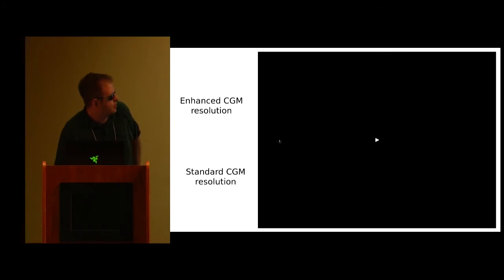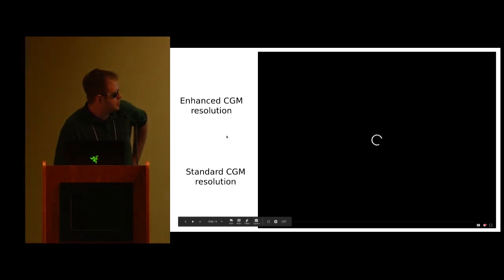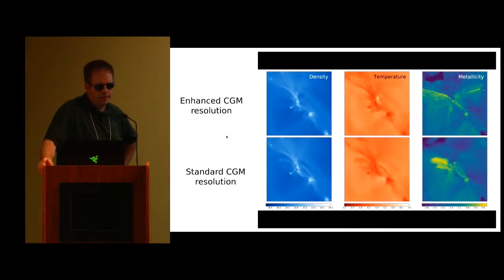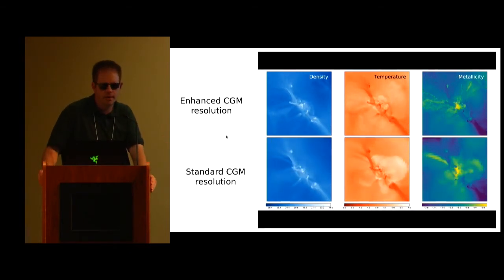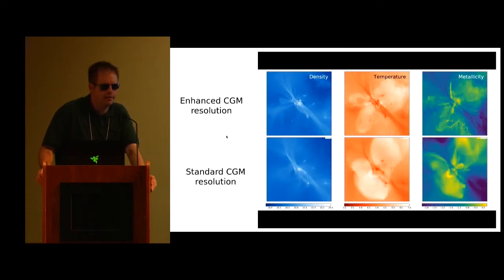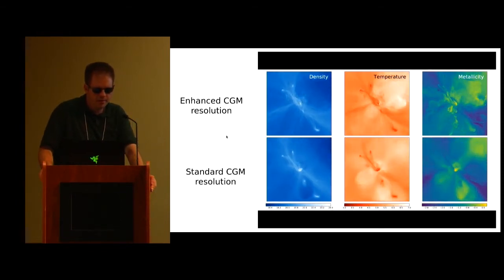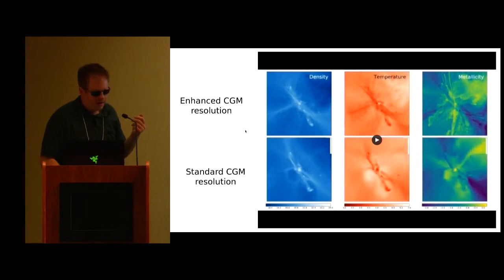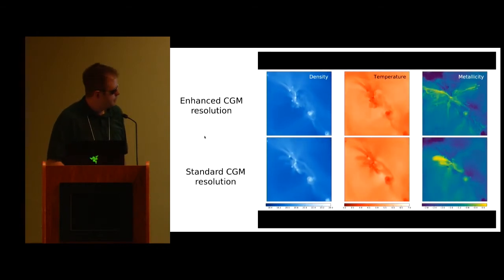So looking at two different simulations where the top one is with this forced enhanced refinement and the bottom one is a standard refinement, the group found two primary differences. One in that the enhanced resolution inhibited mixing of cold and warm gas, so inhibiting mixing of metal rich and metal poor gases. So in effect, a standard resolution simulation would have artificially too high mixing. The second was that the higher resolution allowed cold gas instabilities to form, where at warmer temperatures, these instabilities just collapse. They just rapidly cool and collapse.